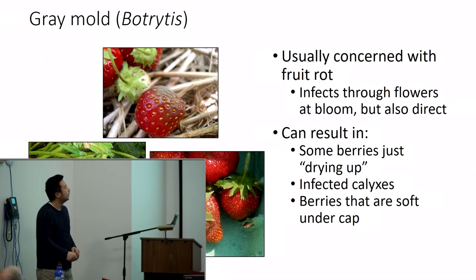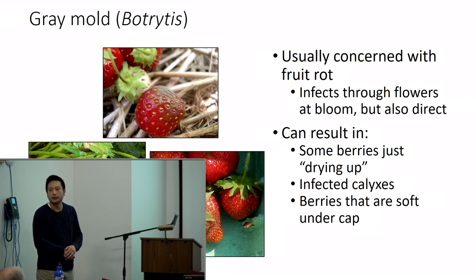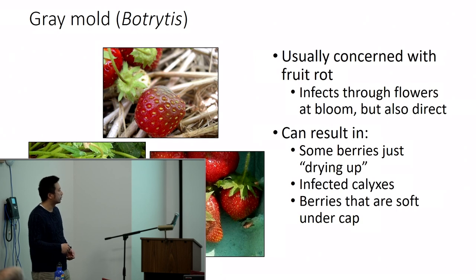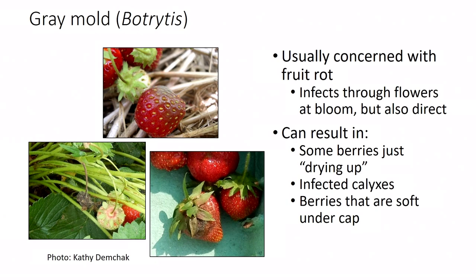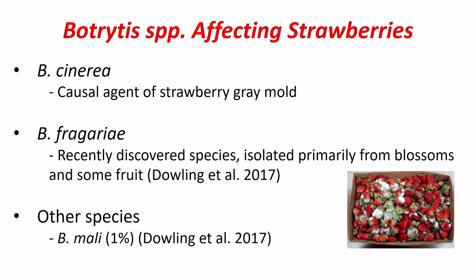Moving on to Botrytis — I'm sure you're all familiar with it. It's also a very important fungal pathogen on strawberries. It can also cause crown rot — not inside the crown, just the crown area — and strawberry crown rot typically occurs early in the season. But primarily it's a fruit rot pathogen. There are actually multiple different species responsible for strawberry Botrytis gray mold.